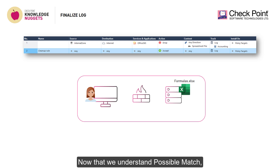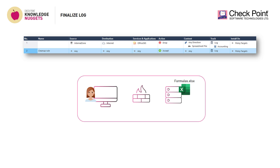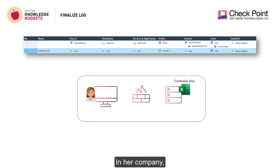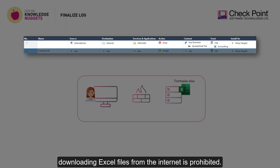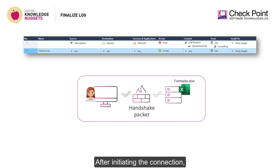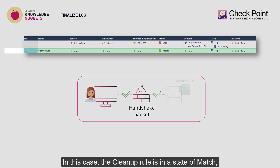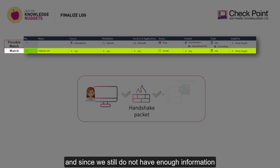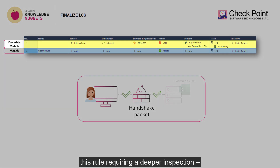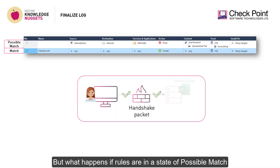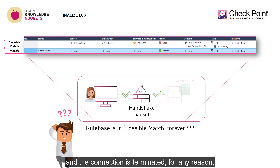Now that we understand possible match, let's throw in a twist in the plot. Rachel is trying to download an Excel spreadsheet which contains formulas that can help her in her line of work. In her company, downloading Excel files from the internet is prohibited. After initiating the connection, there is a malfunction on the website and the connection is terminated. In this case, the cleanup rule is in a state of match, and since we still do not have enough information on the first handshake packet to determine the deeper nature of the destination, this rule, requiring a deeper inspection, will be in a state of possible match. But what happens if rules are in a state of possible match and the connection is terminated, for any reason, before the final match can be reached?